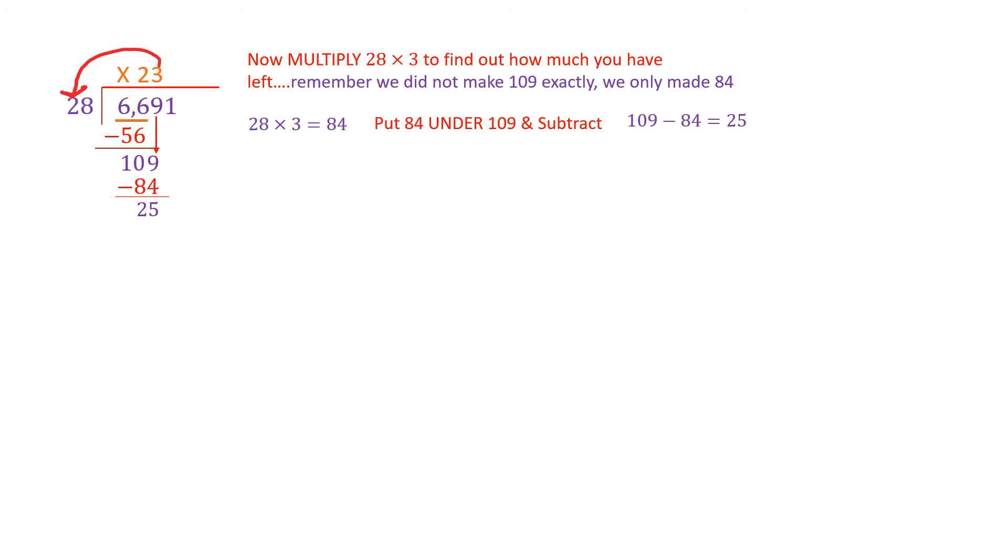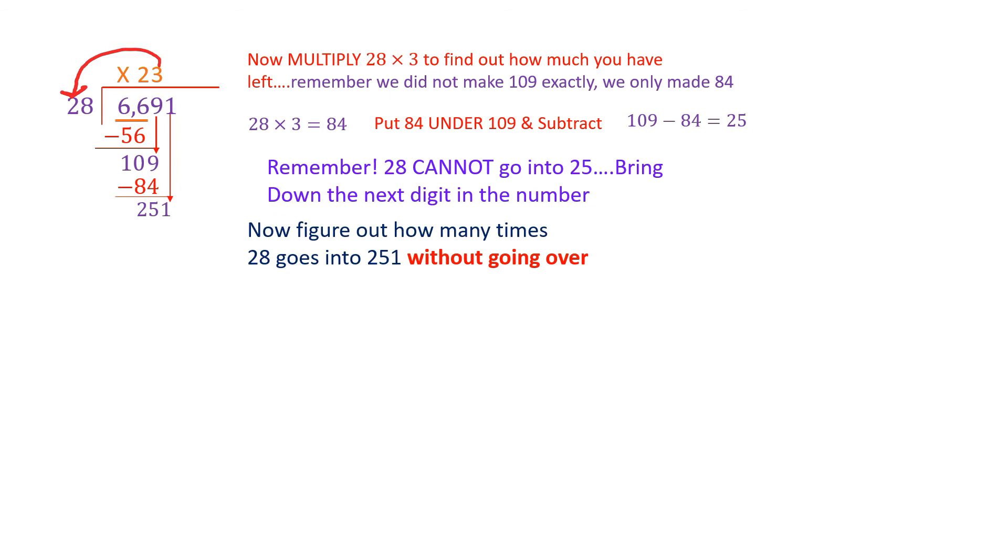So what are we going to do? Same thing. Put 84 under 109 and subtract to figure out what's left over. What didn't we take care of? 109 minus 84 is 25. And so we're going to put that underneath. Now we have to figure out how many times can 28 go into 25? Trick question again. 28 can't go into 25 because 28 can't go into any number lower than 28. So we need to bring down the very last digit in the number. We still have one digit we haven't accounted for. So we're going to take this one and we're going to bring it down. And now we'll figure out how many times 28 goes into 251 without going over.